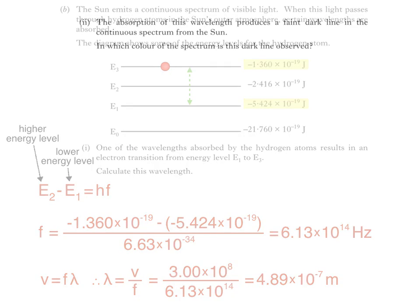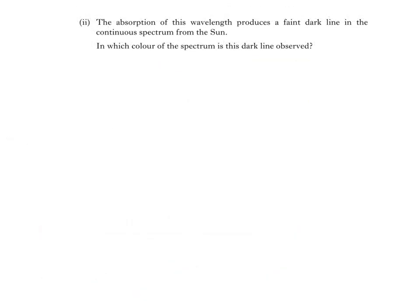Part 2 of the question says, the absorption of this wavelength produces a faint dark line in the continuous spectrum from the sun. In which color of the spectrum is this dark line observed? Now remember that the wavelength we calculated in part 1 was 4.89 times 10 to the negative 7 meters. If we compare this to the wavelengths listed in the data sheet at the front of the exam paper, we'll need to convert this to nanometers.